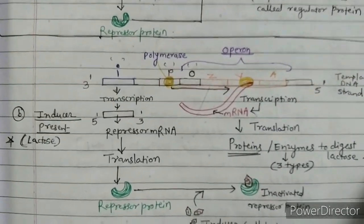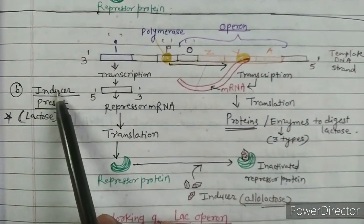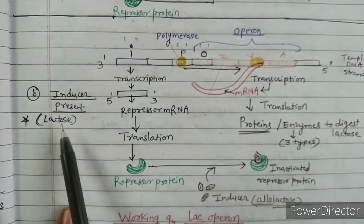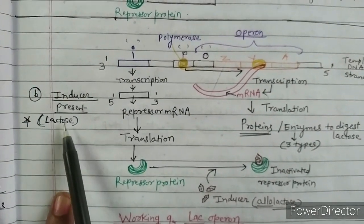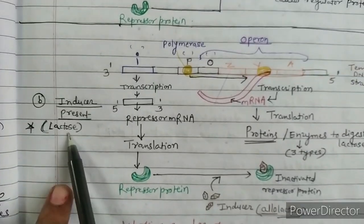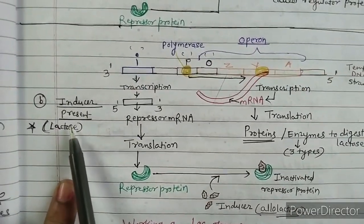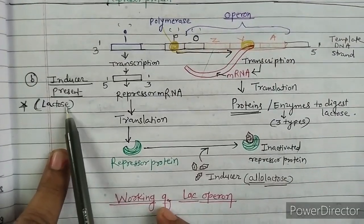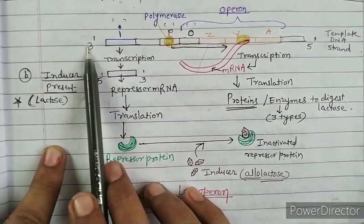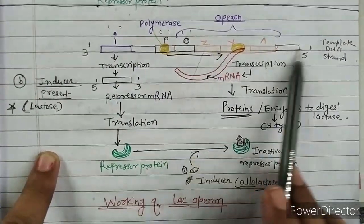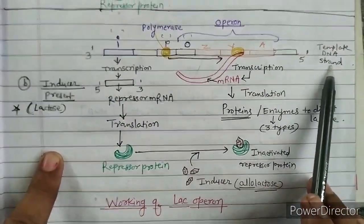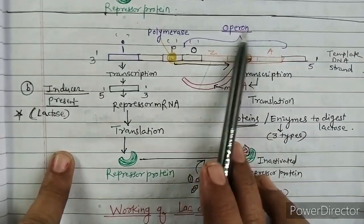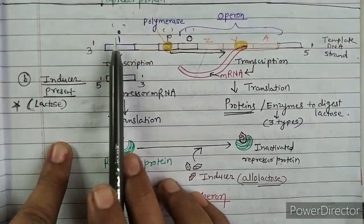Now we will see the second condition - what happens when in the culture medium inducer is present, that is when lactose, the disaccharide sugar, is present. We add this sugar to the E. coli bacteria culture medium as substrate. Now see, the same diagram - the template DNA strand running from 3 dash end to 5 dash end, with the regulator gene here.